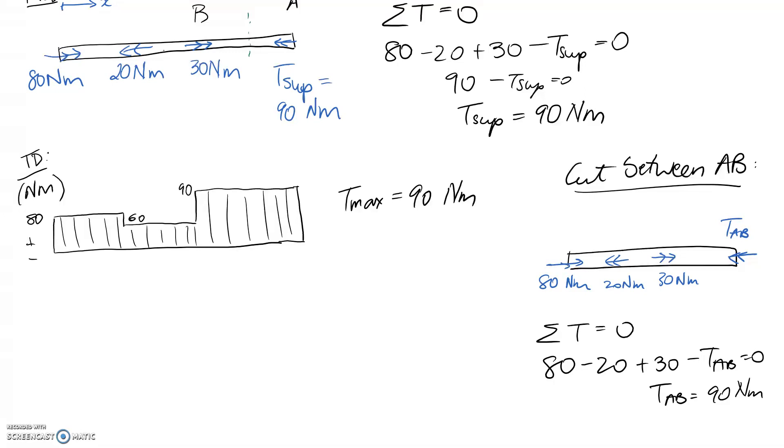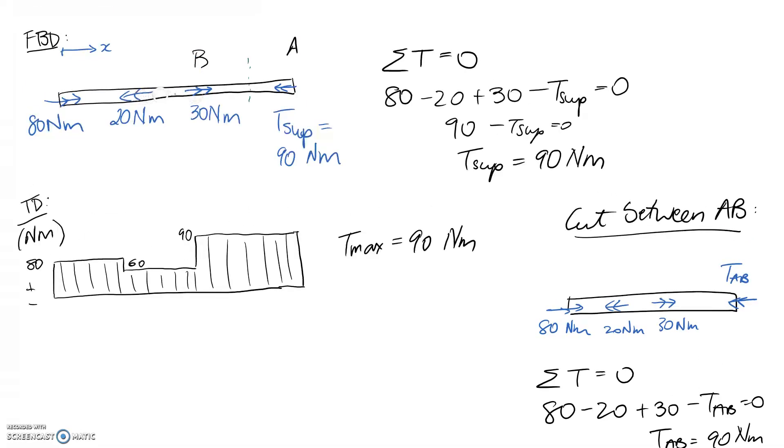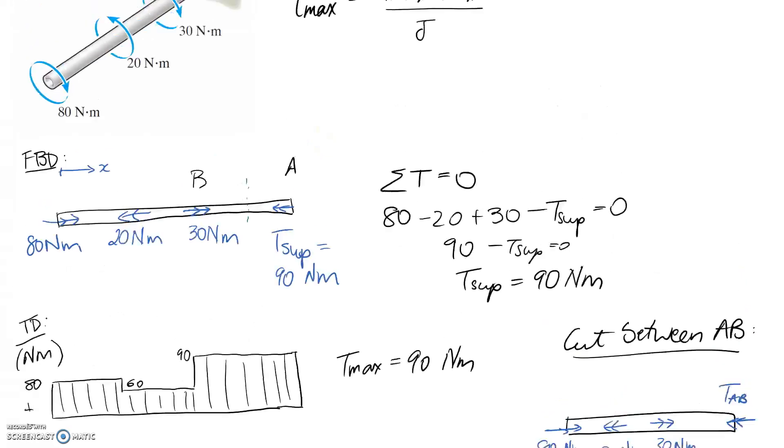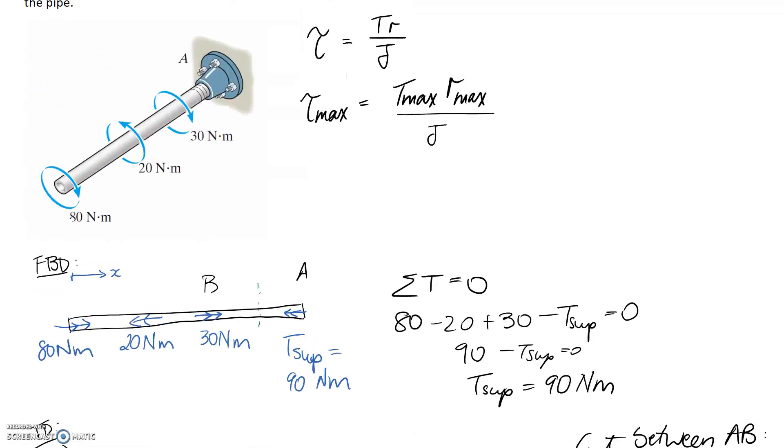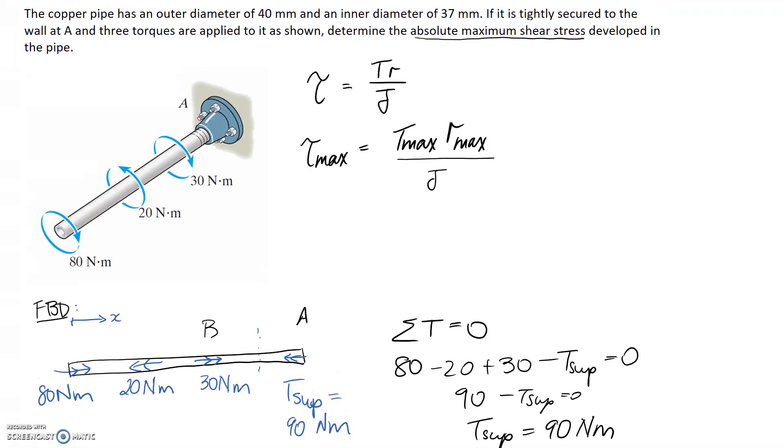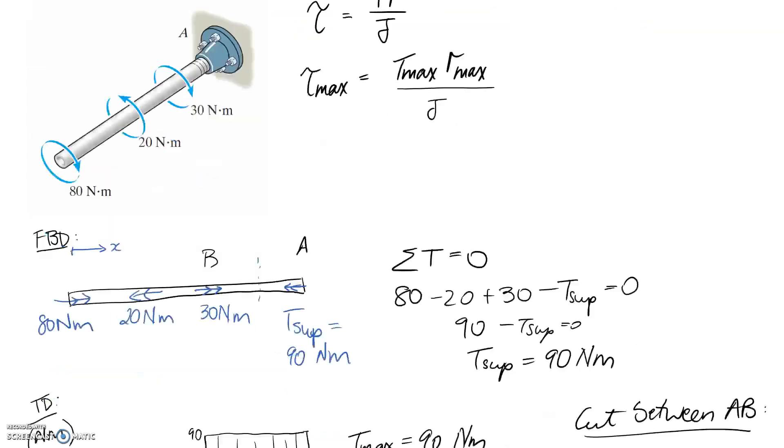That's exactly the same as what we got on the diagram. You could apply this process again for the other sections between the 20 and 30, and between the 80 and 20, but you should just verify you get the same result as the torque diagram. If you're given the option, torque diagrams are generally easier than the cut method. Moving on from that side note, what we're trying to do is fill out this equation for maximum shear stress. The next thing I need to find is R max and J, and these come from the cross section of our pipe.